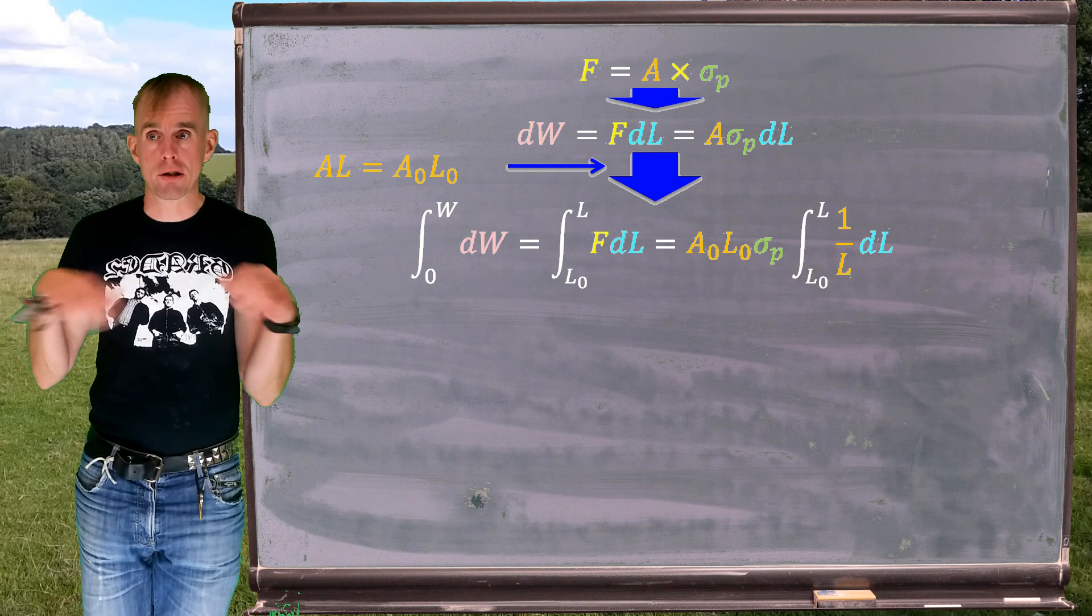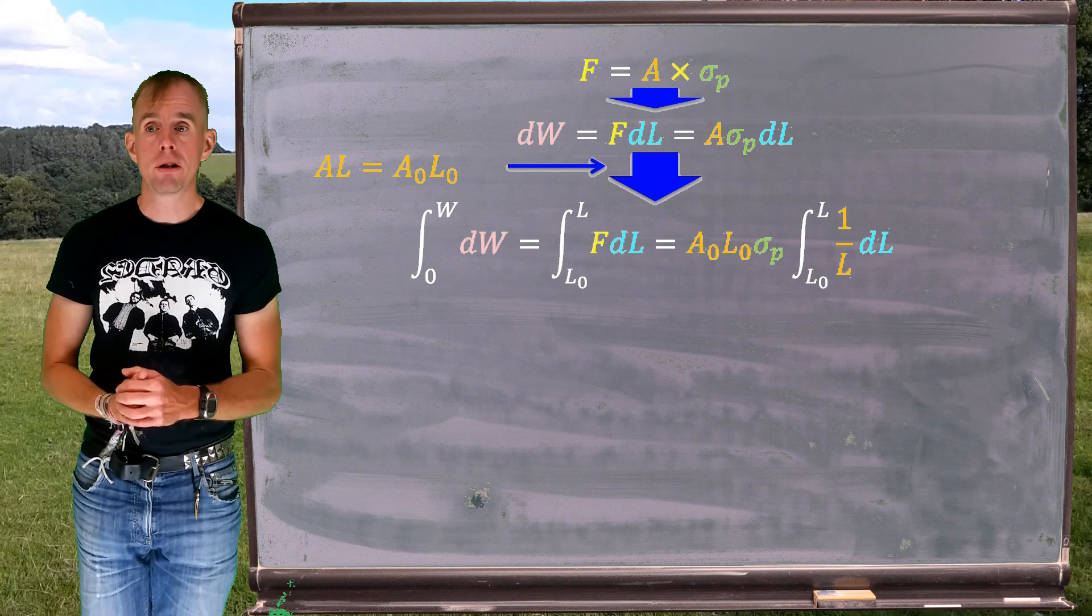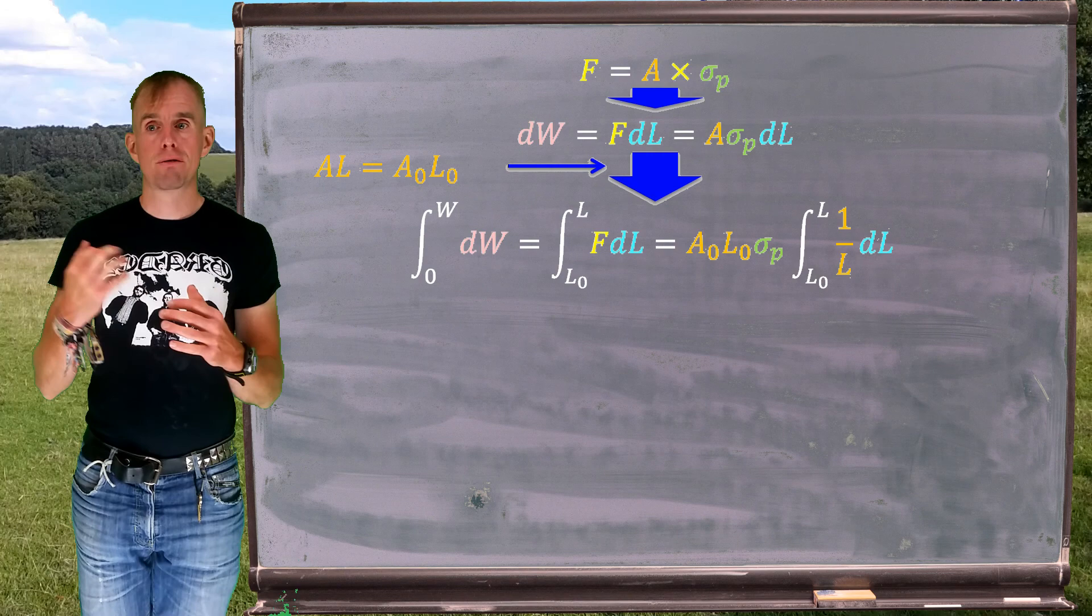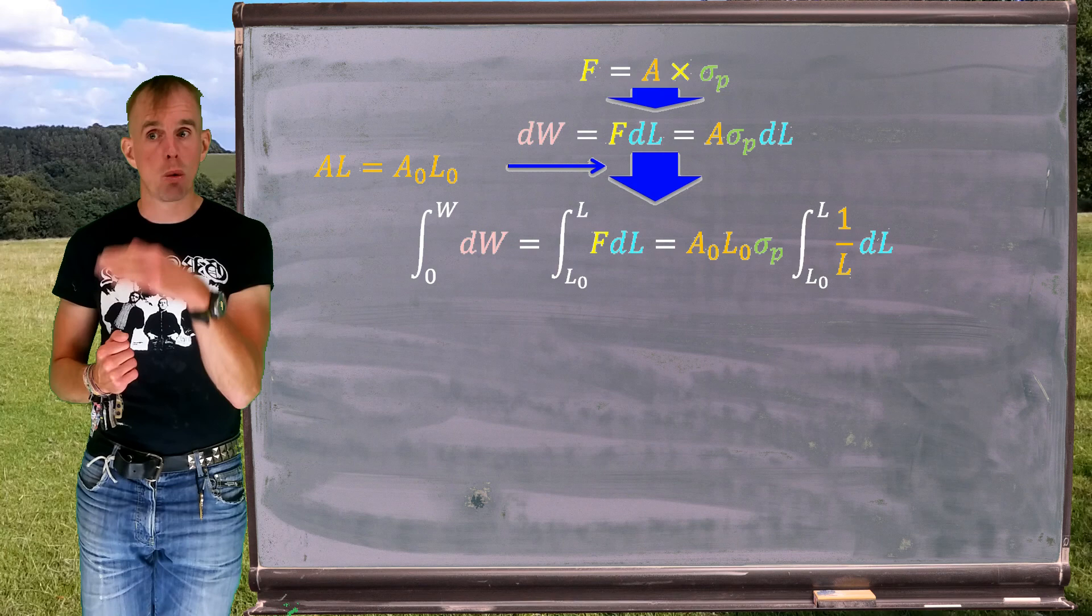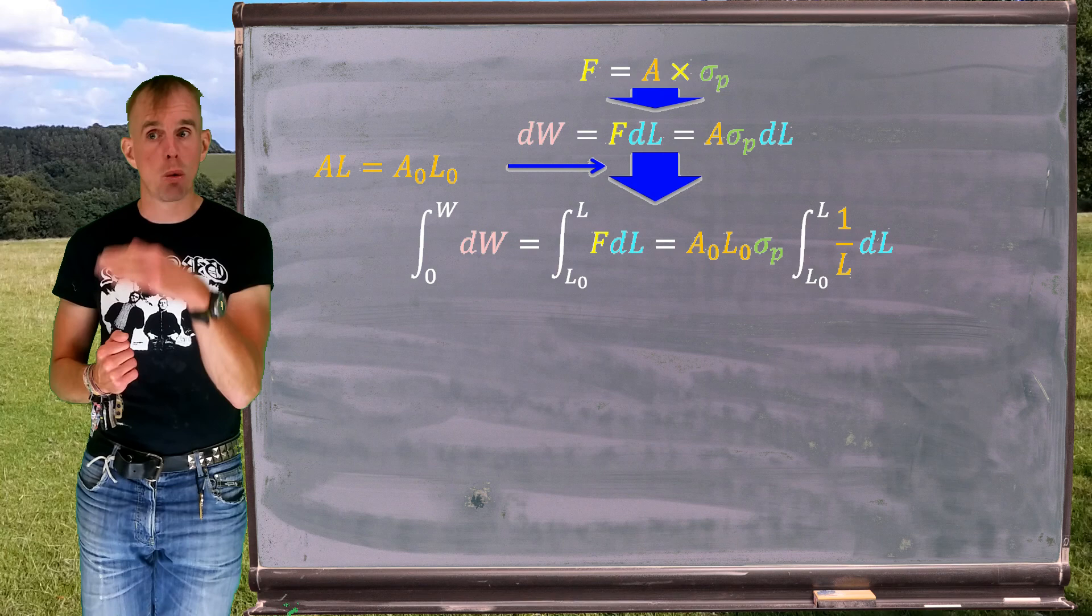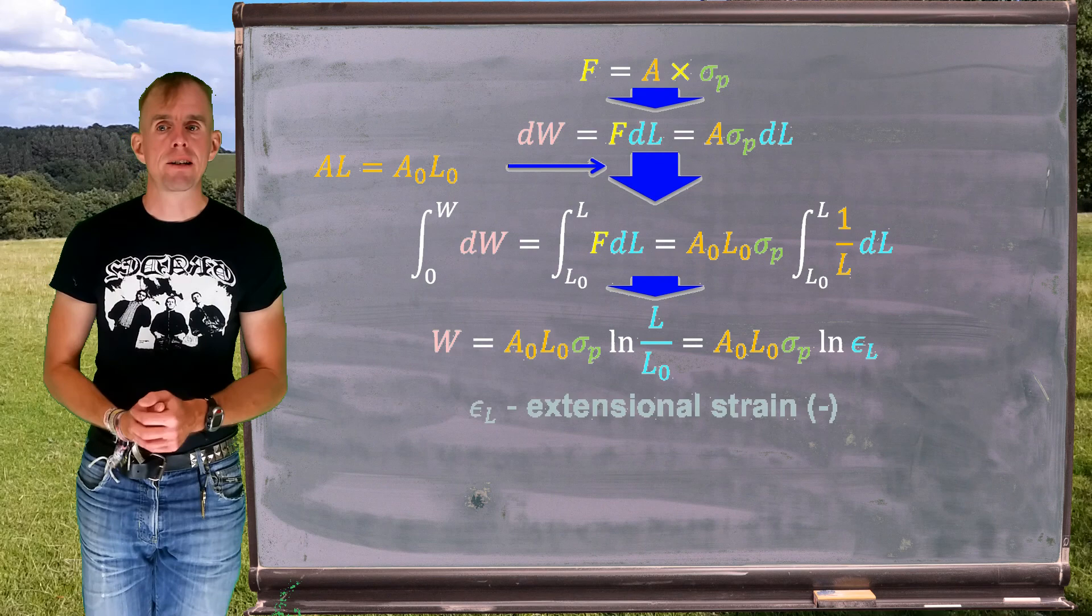So let's make L the subject of that little expression and substitute it into our work expression which means that the work done, the integral of dW from 0 to W, is simply A0 L0 sigma p times the integral of 1 over L dL with limits of L0, the initial condition when there's no work done, through to L, the final length, the final length of that cylinder once all the work W has been done. So performing that integration we get the result that W, the work required, is A0 L0 sigma p, plastic bulk yield strength, log L over L0.